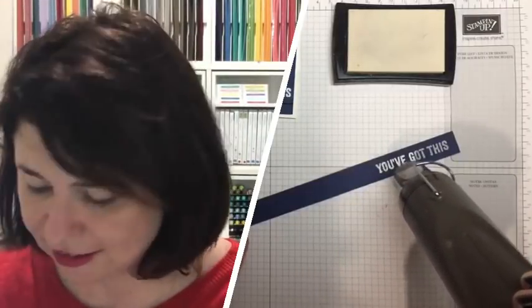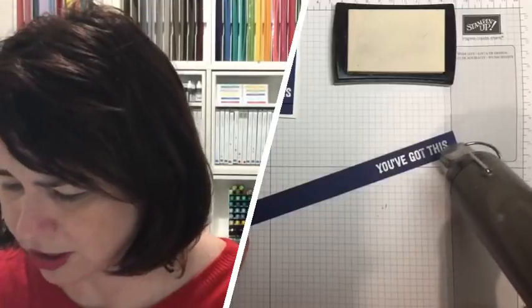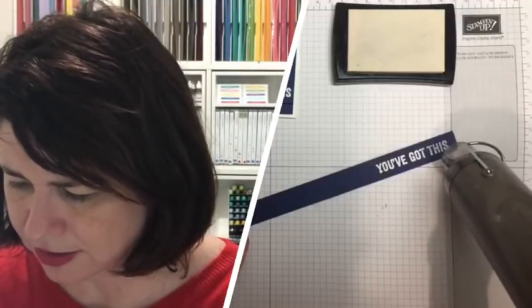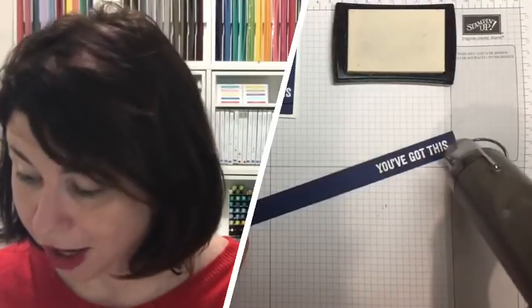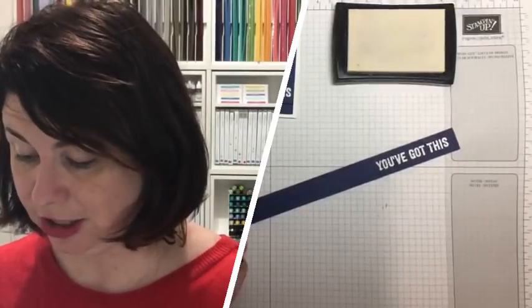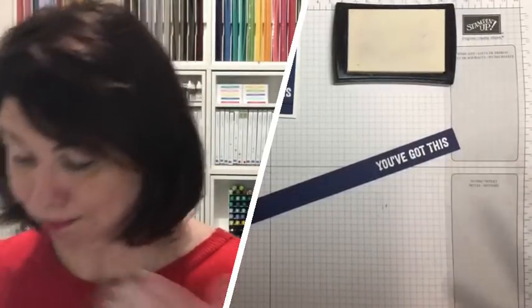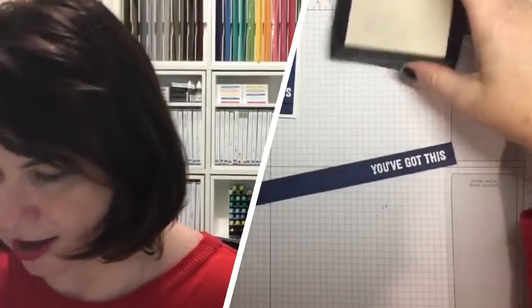But my number one go to is definitely the white. I absolutely love using white emboss, especially if I want it to really pop. Look at this. It's like, here I am. I'm popping out.